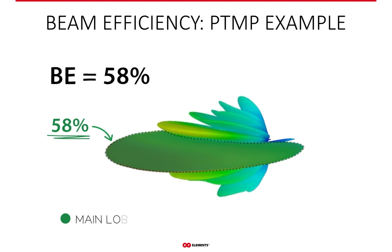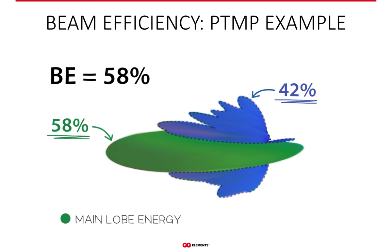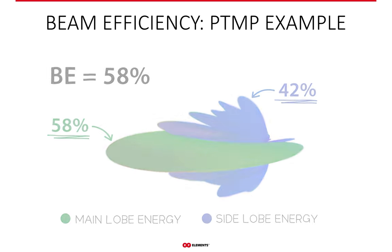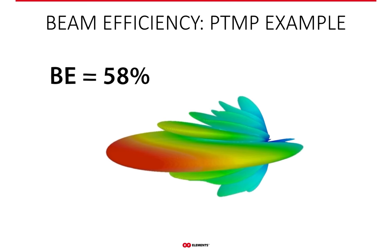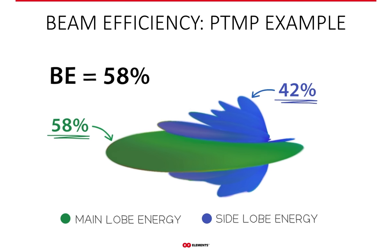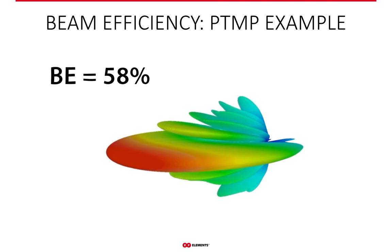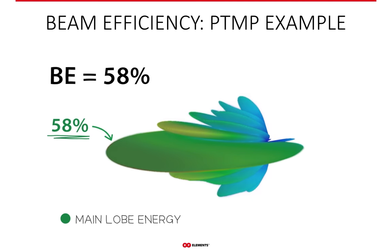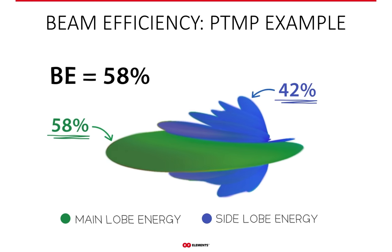For a concrete example, here is the radiation pattern of a generic patch array antenna with a beam efficiency of 58%. That means 58% of the energy is in the main lobe where we want it, and the remaining 42% is in the side lobes — completely undesired. Note that all side lobes are included: beam efficiency accounts for the full 3D data, unlike other noise suppression measures such as front-to-back ratio, side lobe level, or ATCP masks.